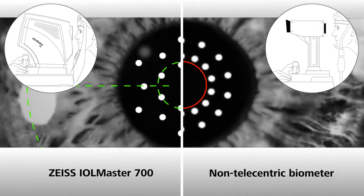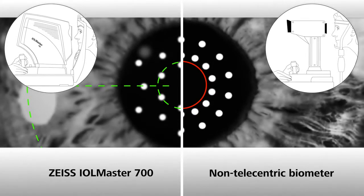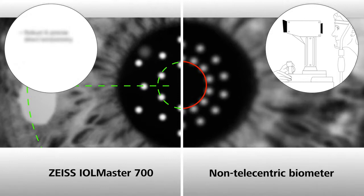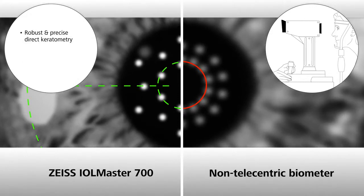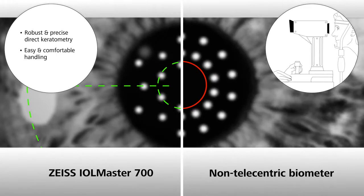In clinical practice, you want a system that you can rely on in every situation. With the IOL Master 700, you get robust and precise direct keratometry that is easy to use for keratometry measurements.